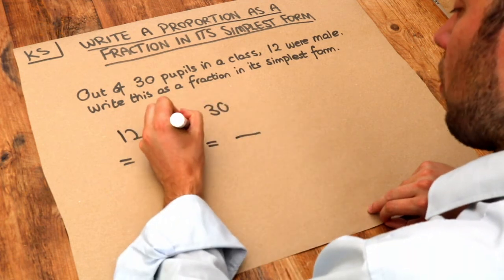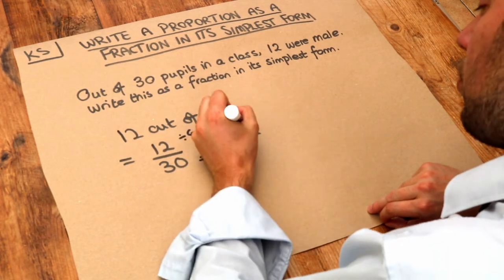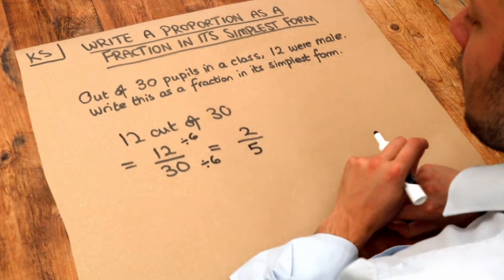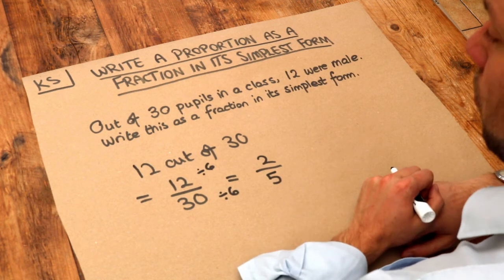So we're going to divide top and bottom by 6. Now 12 divided by 6 is 2, and 30 divided by 6 is 5. And that means two-fifths of the class were male, and that is our proportion.